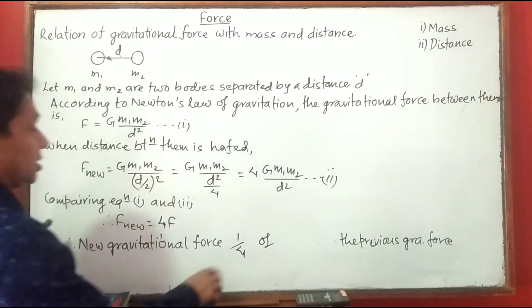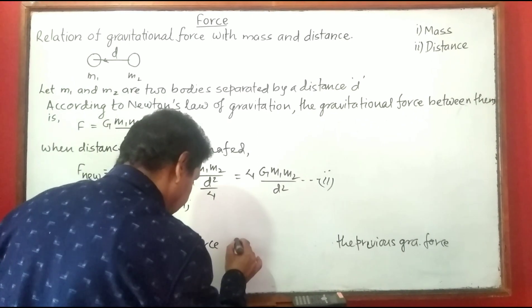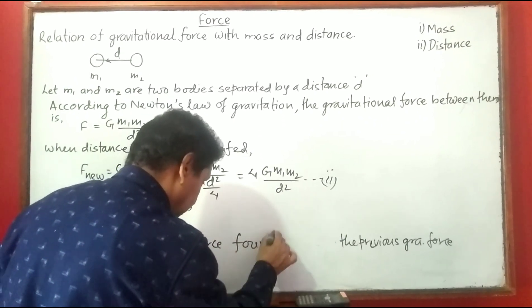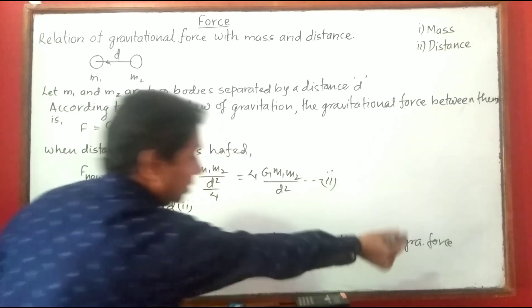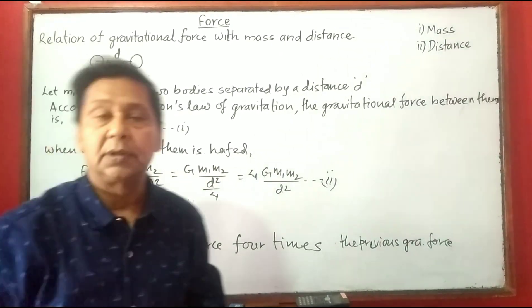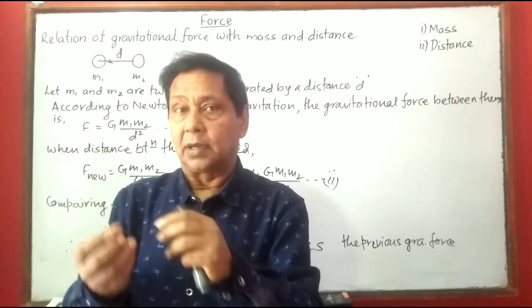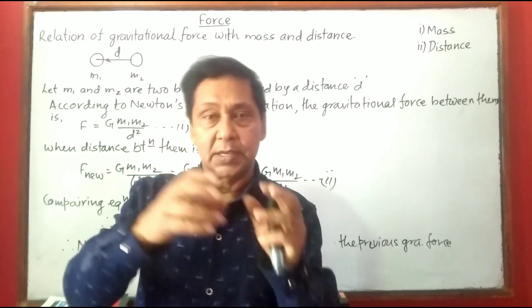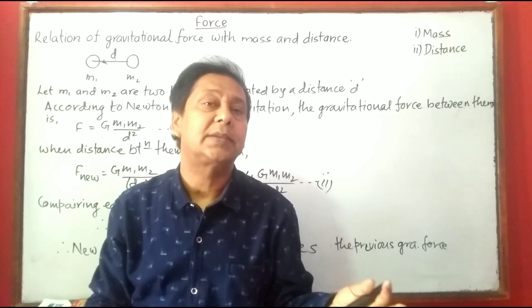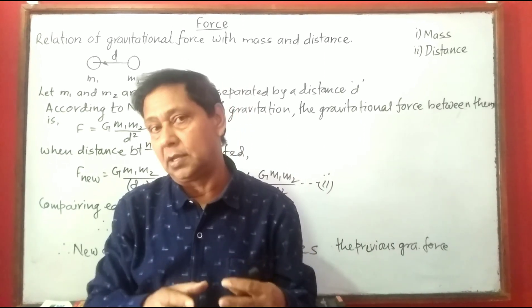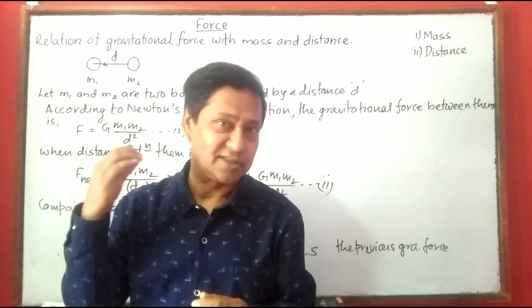Therefore, the new gravitational force is 4 times the previous gravitational force. In this way, the relation between gravitational force and mass, and the relation between gravitational force and distance, can be asked in examination in the sense of numerical problems. We can solve them this way.